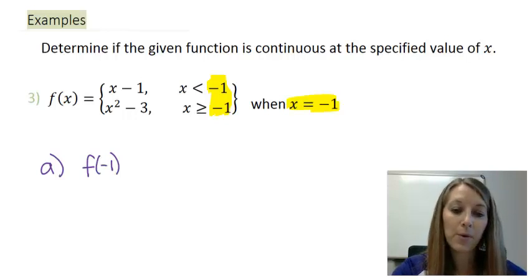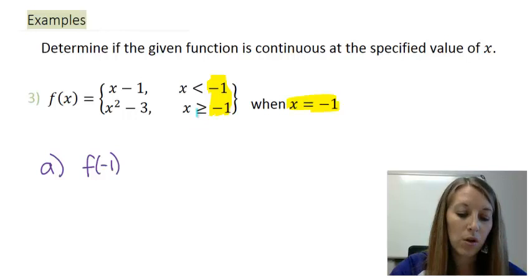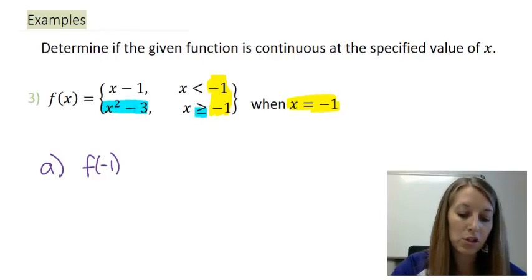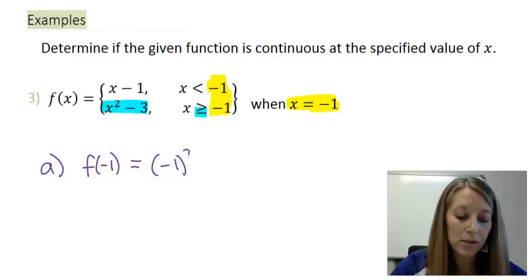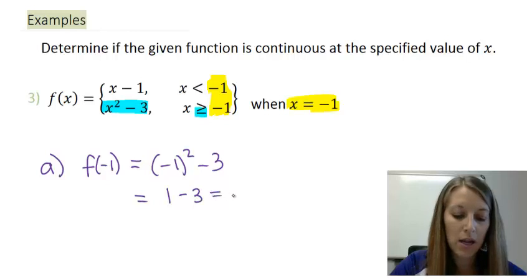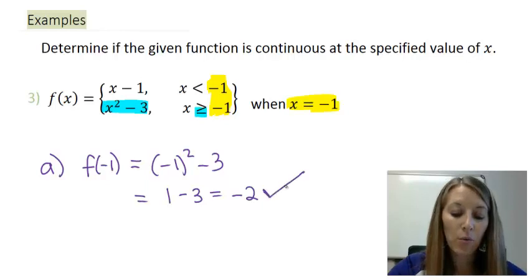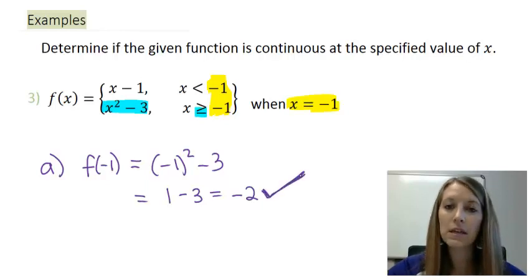Since we're looking at a piecewise function and trying to figure out where it's defined, we look at the 'or equal to.' In this case, it happens to be the second piece, so I plug negative one into my second part of this piecewise function: negative one squared minus three. Negative one squared is positive one, and when I subtract three, I get negative two. No problems here, so so far we believe that our function is continuous.